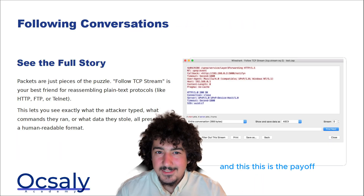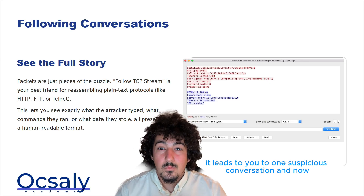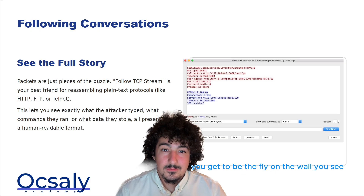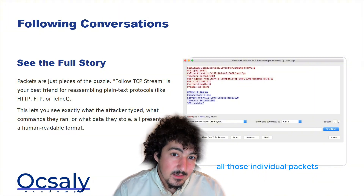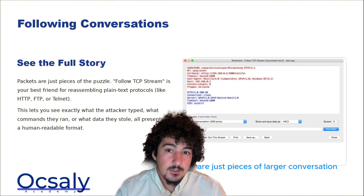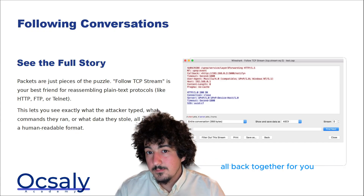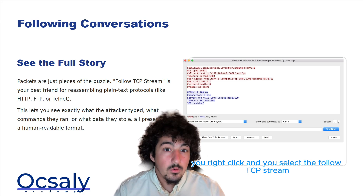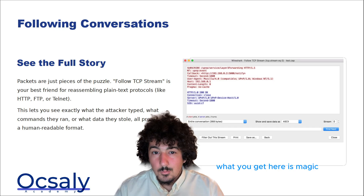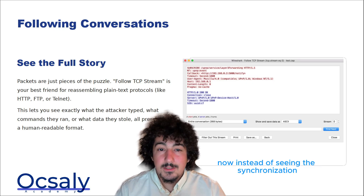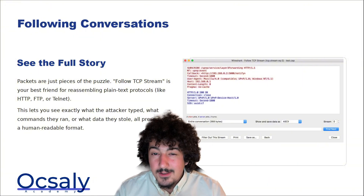And this is the payoff. All that filtering, all that hunting, leads you to one suspicious conversation. And now you get to be the fly on the wall. All those individual packets are just pieces of a larger conversation. Wireshark has a genius feature that puts them all back together for you. If you find a packet in a suspicious stream, you right-click and select 'Follow TCP Stream.' What you get here is magic — instead of seeing SYN, SYN-ACK, ACK, you see the data.